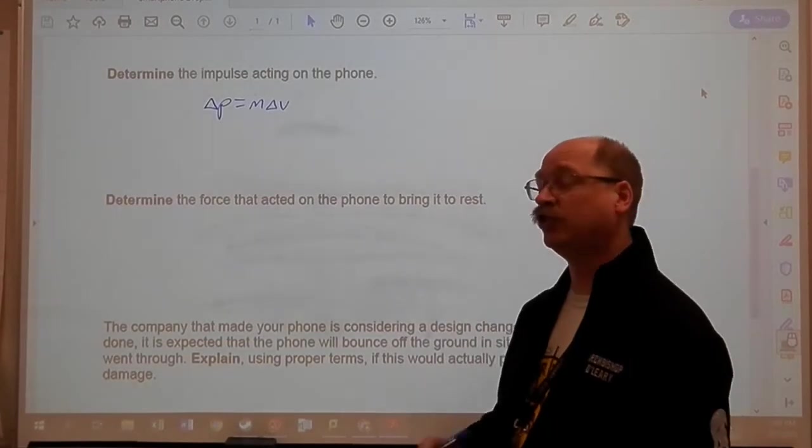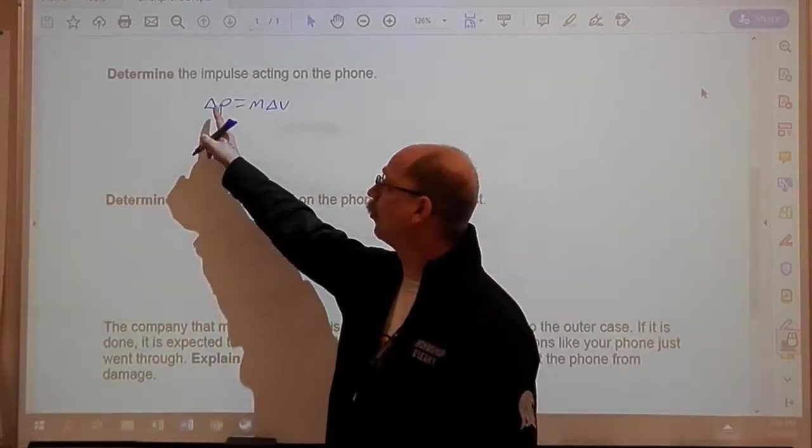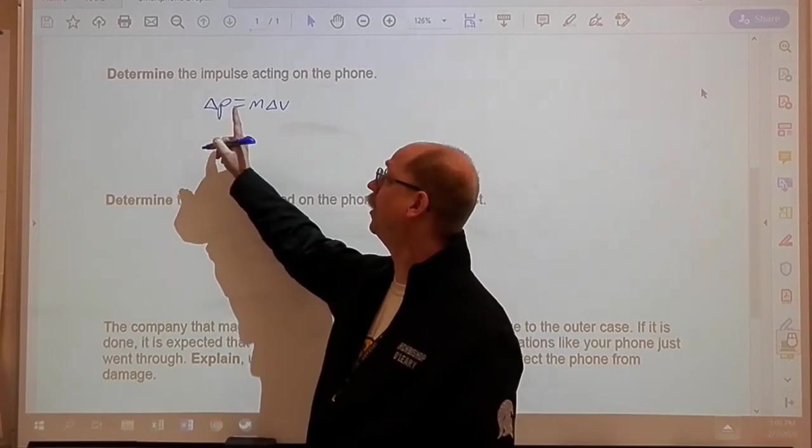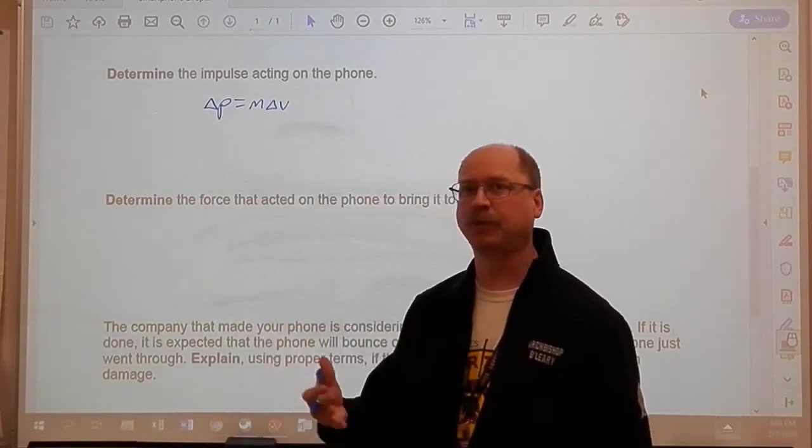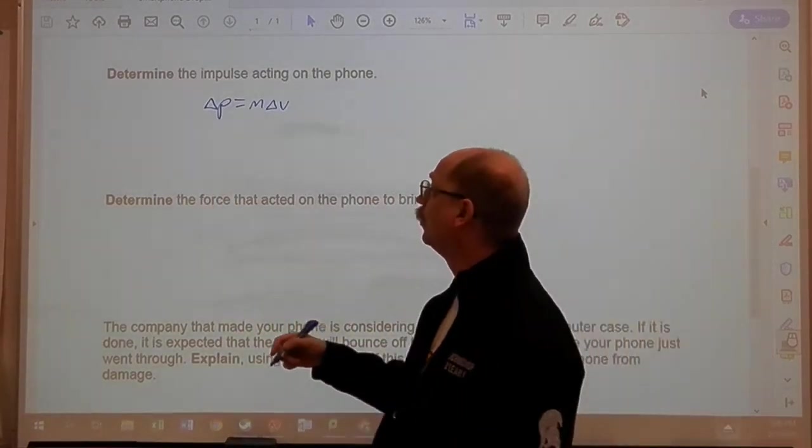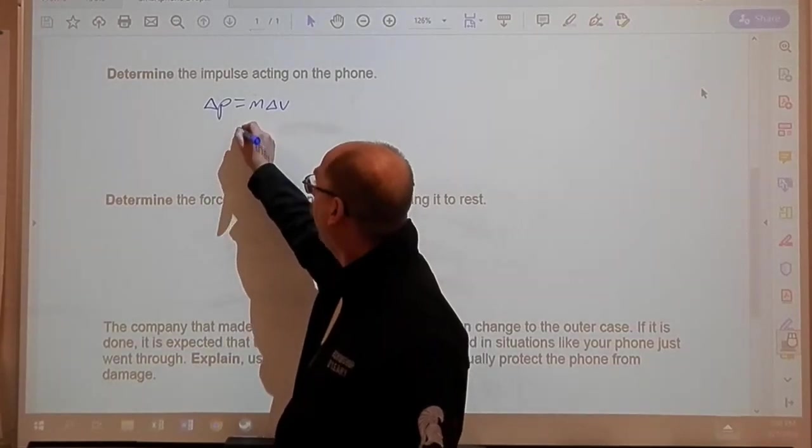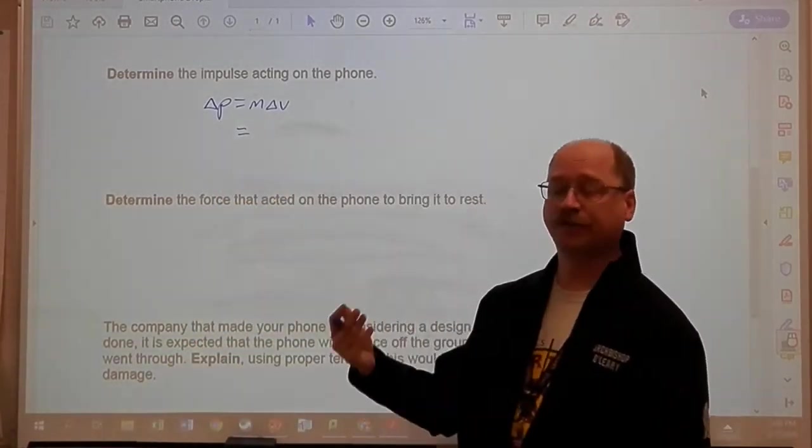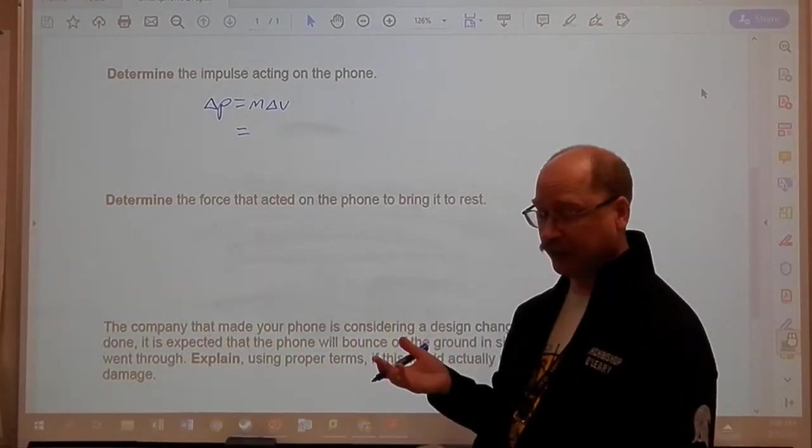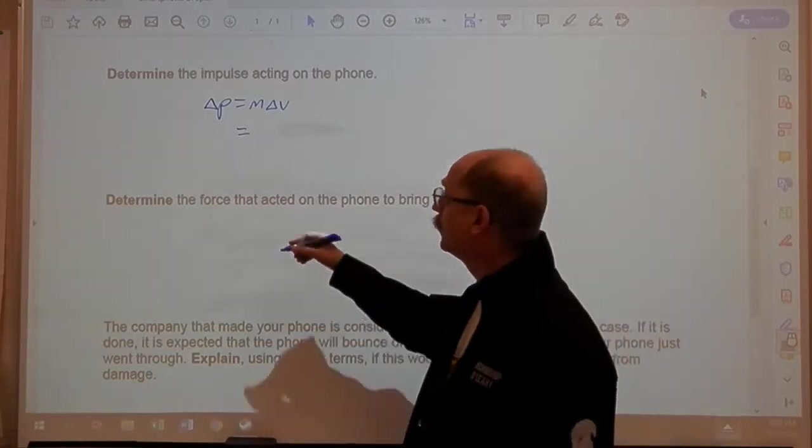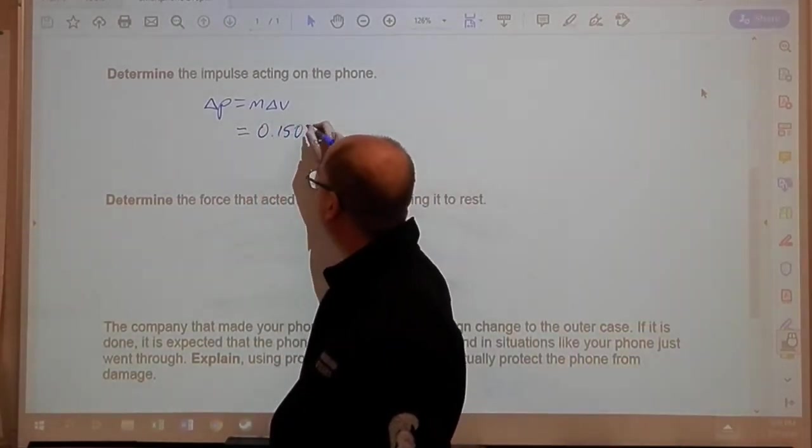And remember, we have to have that delta, otherwise it's momentum. And same thing here, that delta has to be part of the formula because we're looking at a change in velocity. So when it goes falling down, we know that it has a mass of 150 grams, so we're going to change that to .150.